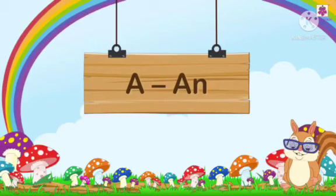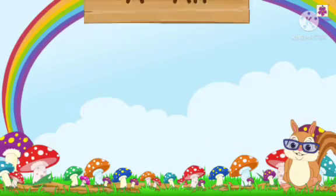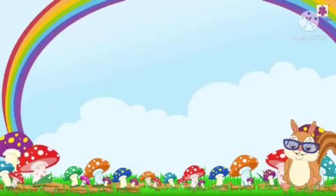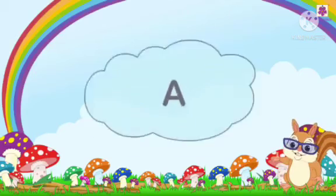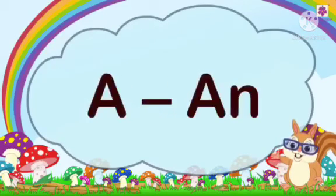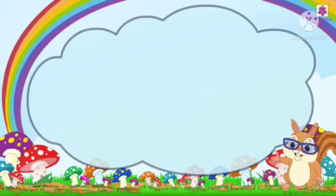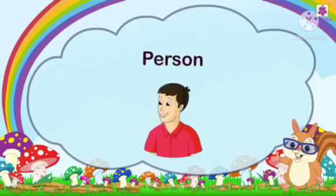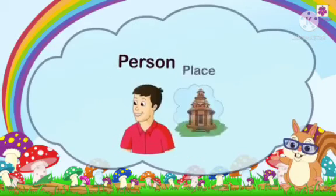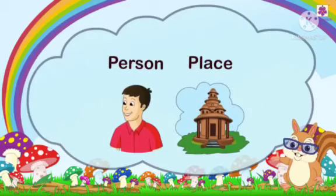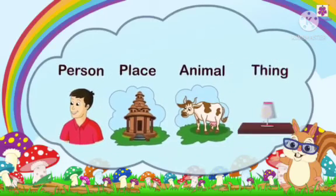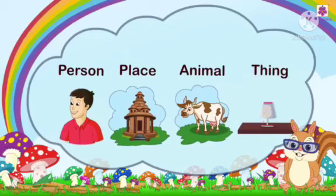Let's have another example of the use of 'a' and 'an.' We use 'a' or 'an' for a person, a place, an animal, or a thing.